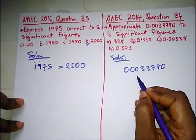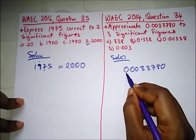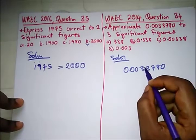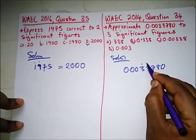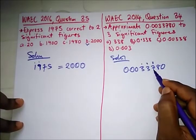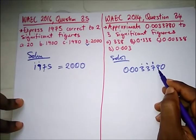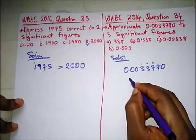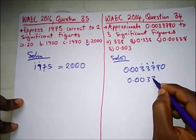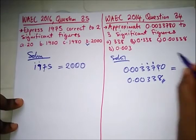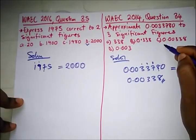In significant figures we start from the non-zero value. These leading zeros don't count, so we start our count from here. They said three significant figures, so this is one, two, three. The number after the third significant figure — can it be rounded up or rounded down? It can be rounded up, so we add one to seven. We're left with 0.00338. The correct option here is option C.